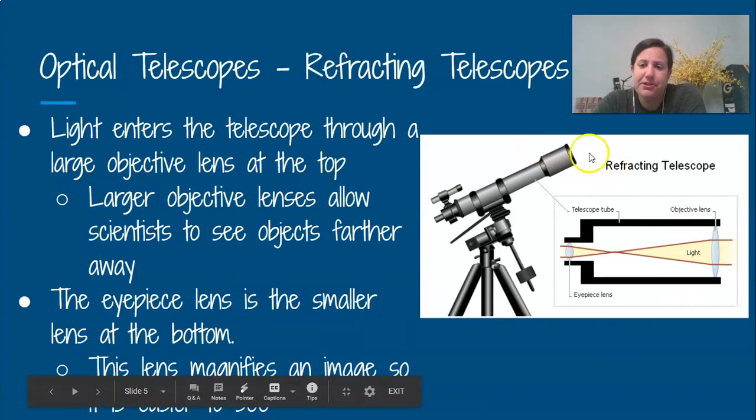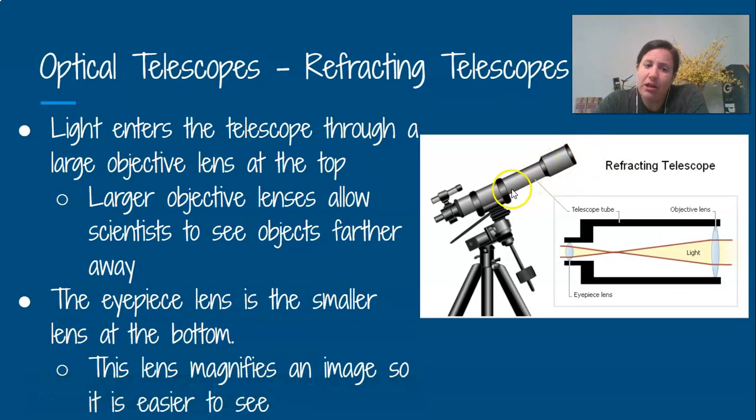So what happens is light enters here through the objective lens, and that lens allows scientists to see far away. So the bigger this lens is, the farther they can see into space and the more expensive the telescope is. The eyepiece is going to be your smaller lens, and that's going to magnify the image so it's easier to see.